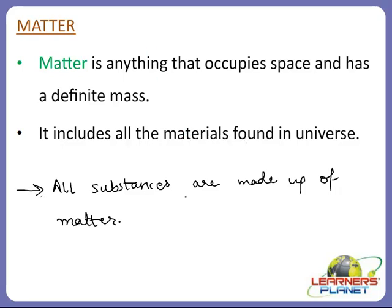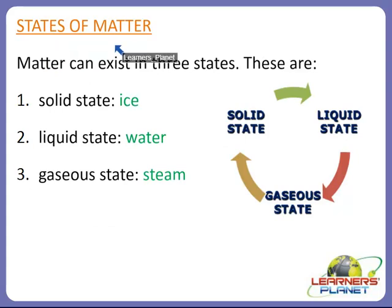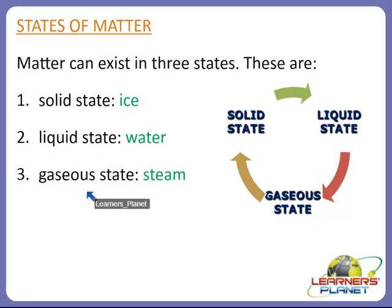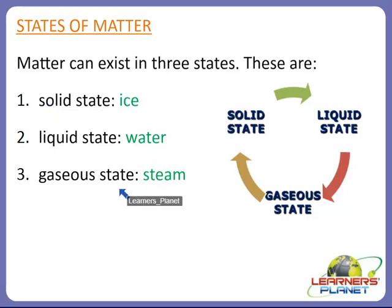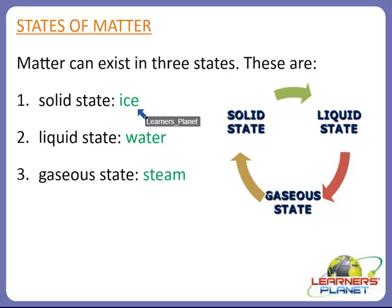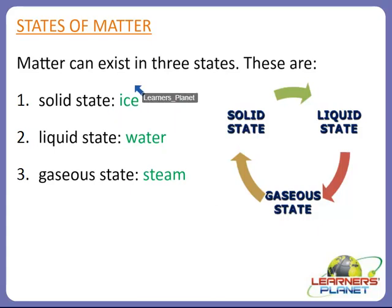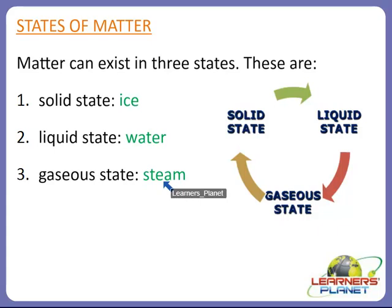How many states of matter exist in nature? Matter can exist in three states: solid state, liquid state, and gaseous state. An example of solid state is ice, an example of liquid state is water, and an example of gaseous state is steam or water vapor. So ice is considered a solid, water a liquid, and steam a gas. These are the three states of matter, and ice, water, and steam are the three states of water.